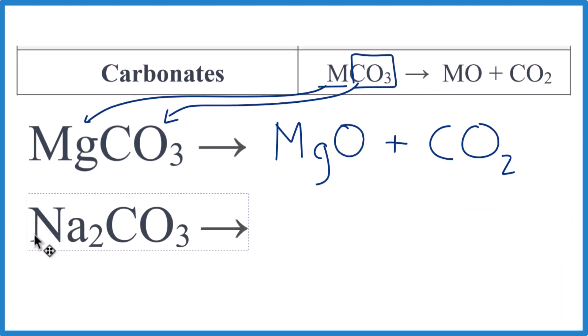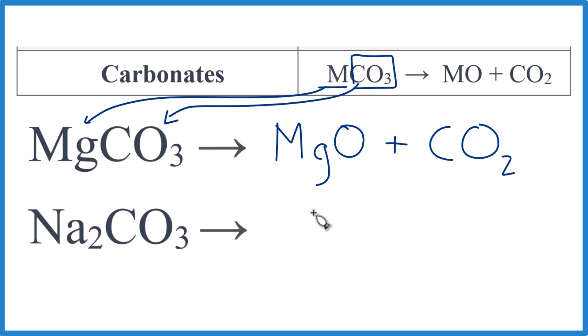So pause, give this one a try. So we'll have our metal, that's the sodium, and then we'll have the oxygen with that, so NaO, plus the carbon dioxide. And this seems like a pretty reasonable answer, except it's not quite right. We need to look at the charge here.